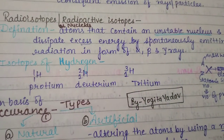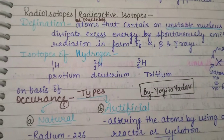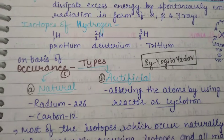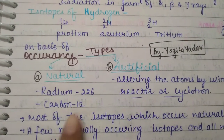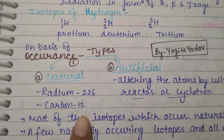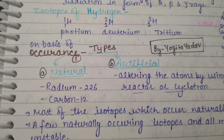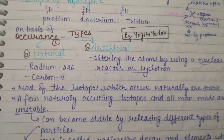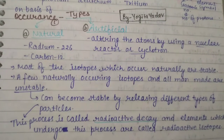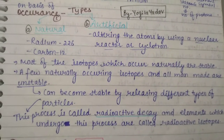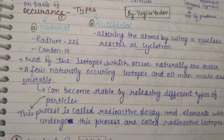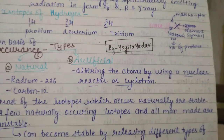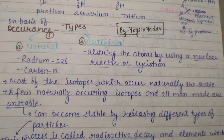We talk about types of radioisotopes on the basis of occurrence. These are of two types: natural and artificial. Examples are radium-226 and carbon-12. Most naturally occurring isotopes are stable. A few naturally occurring isotopes and all man-made ones are unstable. Artificial radioisotopes are made by altering atoms using a nuclear reactor or cyclotron.